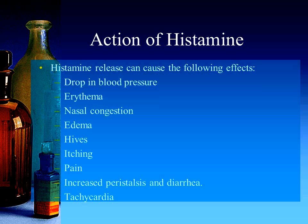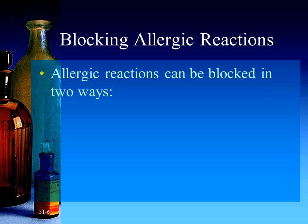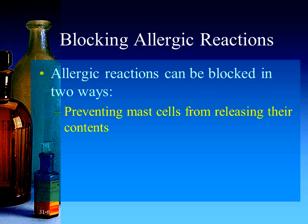These are all the things you will see as a result of your body releasing histamine, which is typically released as the result of an allergic reaction. There are two ways to block an allergic reaction: one is to prevent the mast cells from releasing those contents — if the mast cells don't release, histamine and other substances are not released and there is no allergic reaction. The other way is to block the H1 receptors so they cannot interact with the allergen, preventing mast cell activation and histamine release.